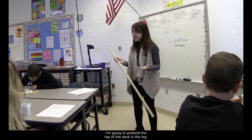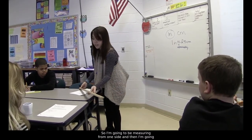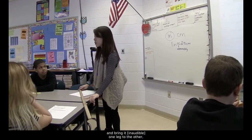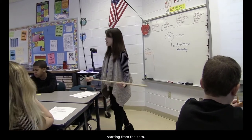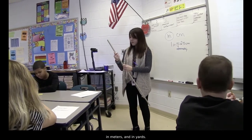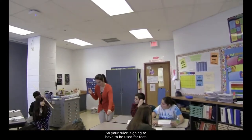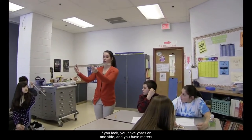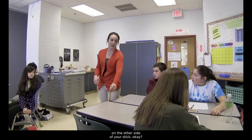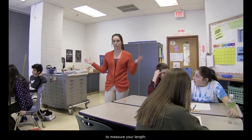So, in case if you couldn't see because I was on the floor, I'm going to pretend that the top of this desk is the leg. So, I'm going to be measuring from one side, and then I'm going to be lining it up to the other leg, gently, and measuring it from one leg to the other, starting from the zero. And notice it says that you're measuring in feet, in meters, and in yards. So, your ruler is going to have to be used for feet.